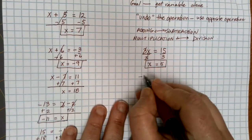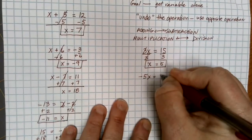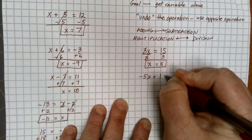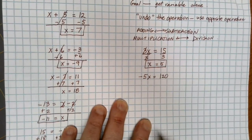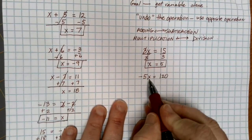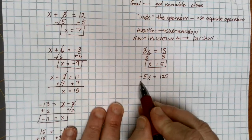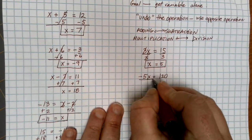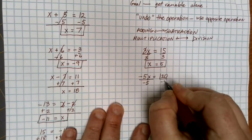Let's look at another example here. Let's suppose that we have negative 5x equals 120. So in this case, I have the x, so I want to get rid of whatever is with the x. In this case, I have a negative 5 that's being multiplied. So when I divide, I need to make sure I divide by the negative 5 to make it go away.